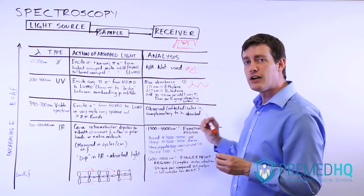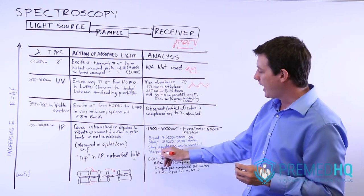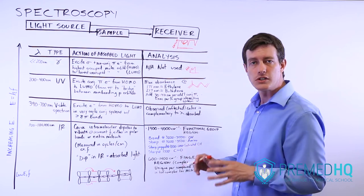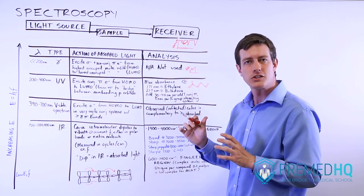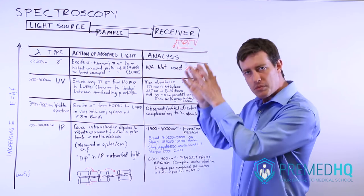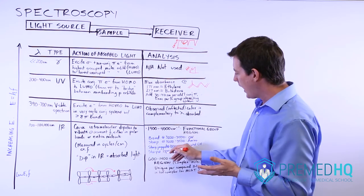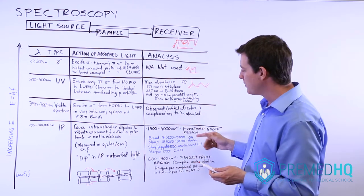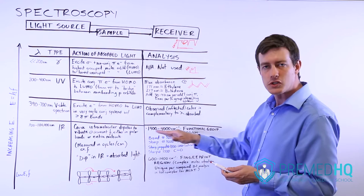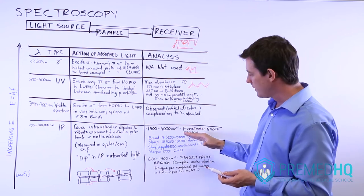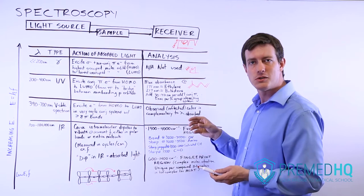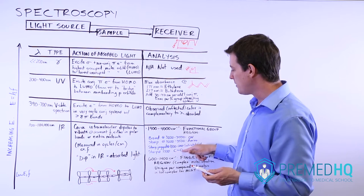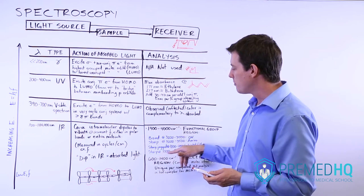The other very high-yield value to be aware of is at 1700 cm⁻¹ — if you see a sharp dip, that's your carbonyl group, which is a carbon double-bonded to oxygen (C=O). So the big ones to be aware of are: the OH group, which is a broad dip at 3200 to 3500; the amino group, which is a sharp dip at 3200 to 3500; and the carbonyl group (C=O), which is a sharp dip at 1700.